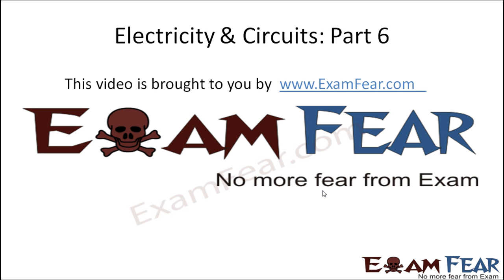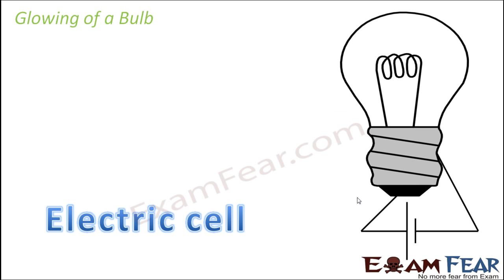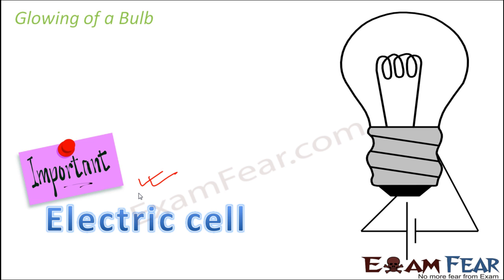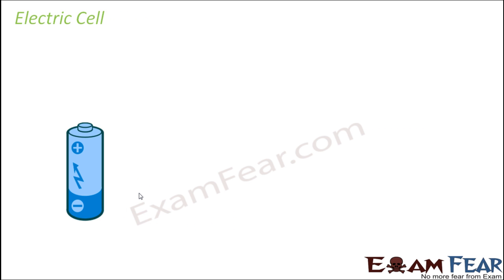This video on electricity and circuits part 6 is brought to you by examfear.com. When we talk about the blowing of a bulb, another important thing without which a bulb cannot glow is the electric cell. Everywhere we talk about electric current, we talk about electrons flowing through the circuit — but who is generating this electric current? The generation of electric current is done by the electric cell. So if there is no electric cell, there can be no current in the circuit.